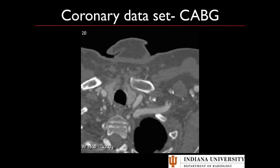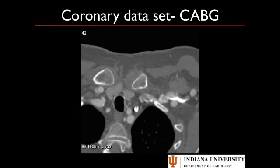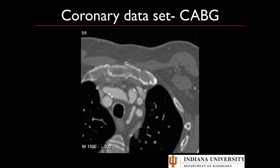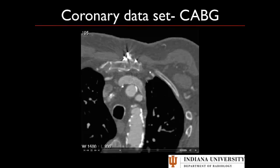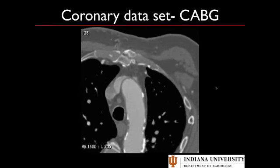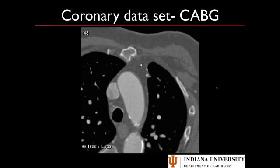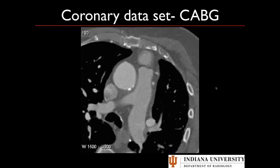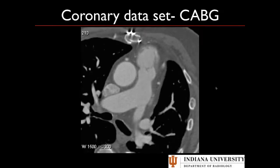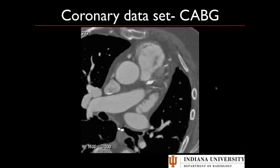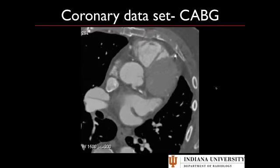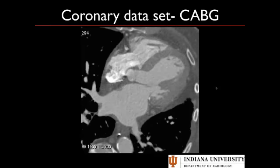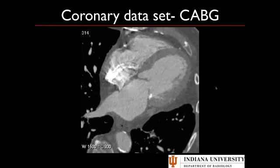Here's a CABG dataset. You'll notice we're starting higher. On a CABG study, especially if you don't know whether the patient has an internal mammary bypass graft, you want to start relatively high so you can see the origin of the left internal mammary artery from the subclavian. I've seen cases where there is stenosis in the proximal left internal mammary artery at the origin from the left subclavian, so you want to follow it all the way down. In general, we always start above the level of the origin of the LIMA and scan all the way down through the heart.